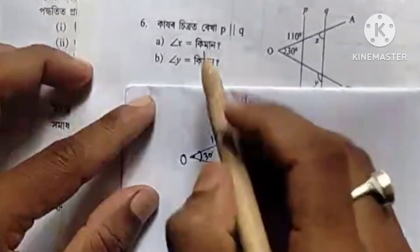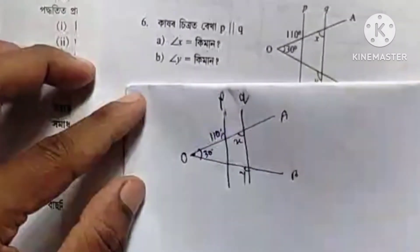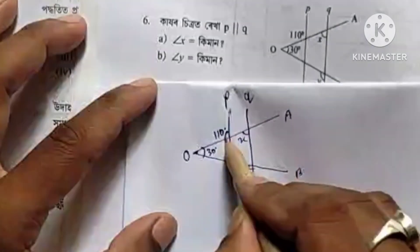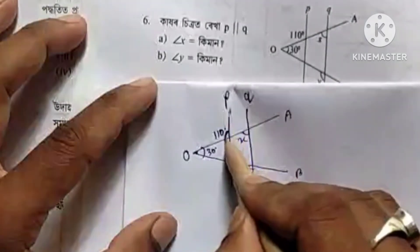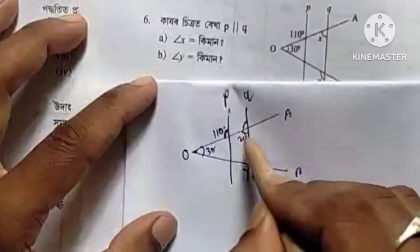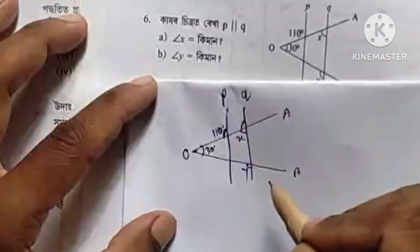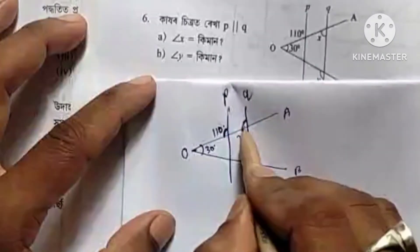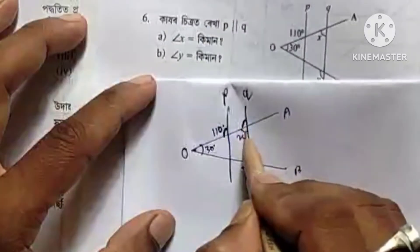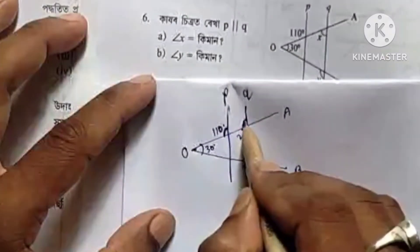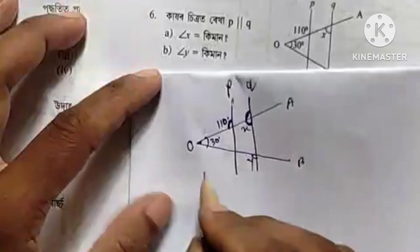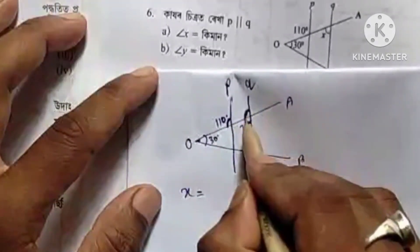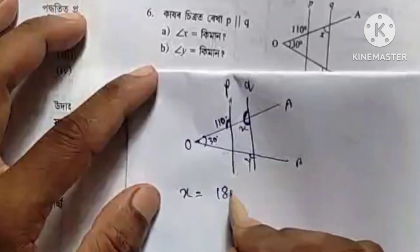So x and y are the same. This is the same. This is 1, 2 degrees. So it is 1, 2 degrees. This is 1, 2 degrees. You can see this will be 1, 2, 2 degrees. And I think this is 1, 2 degrees. So 1, 2 degrees is 1.